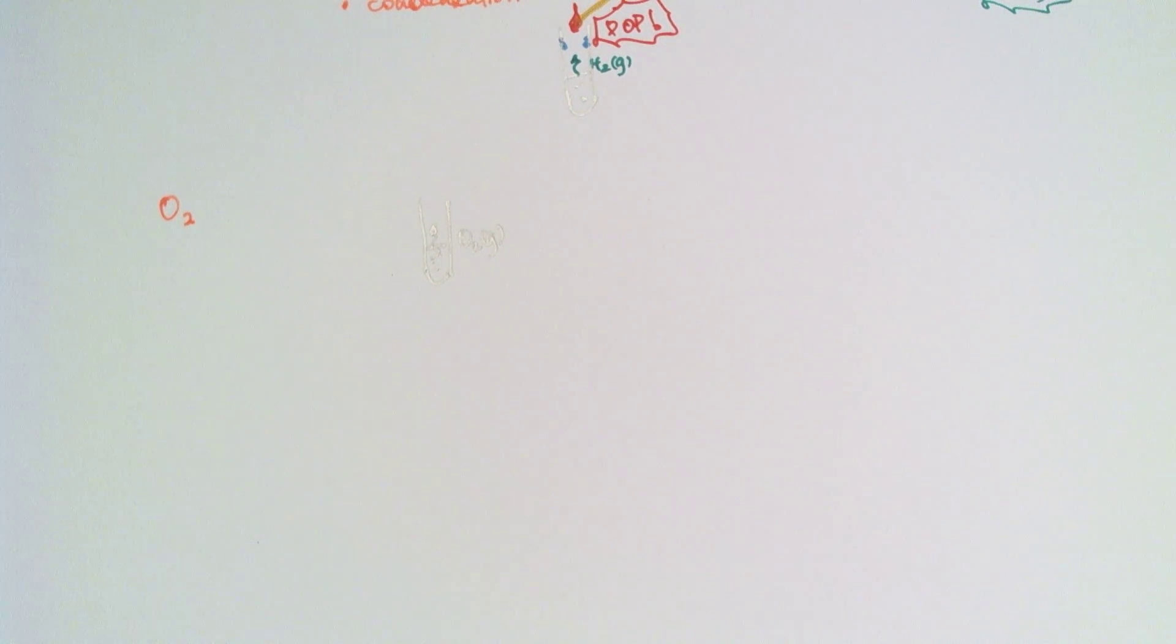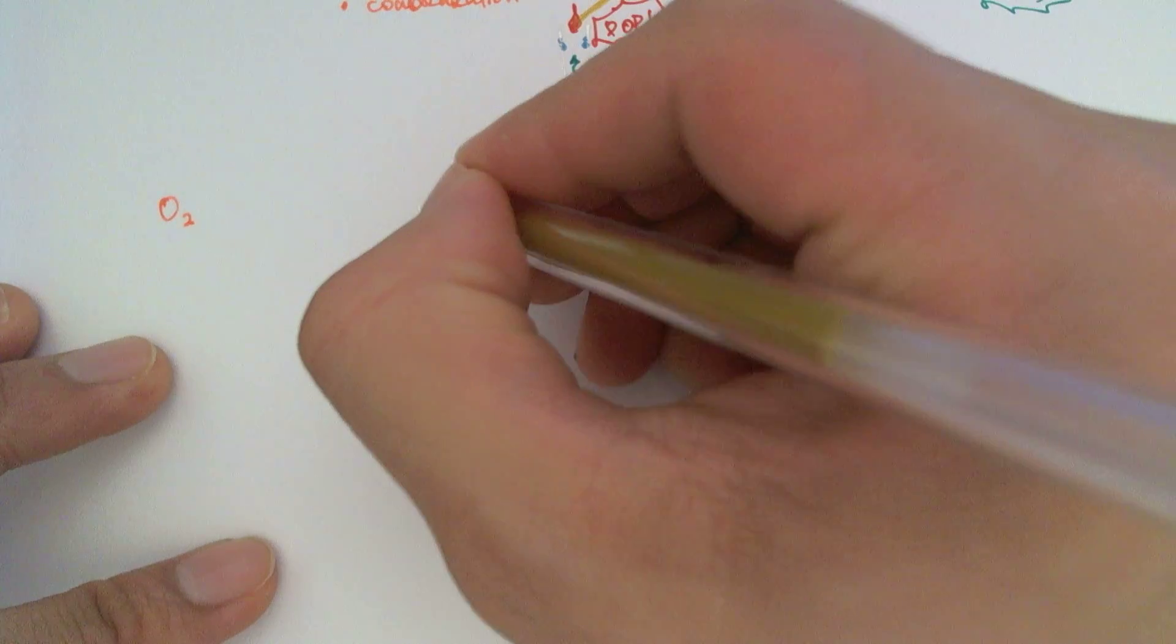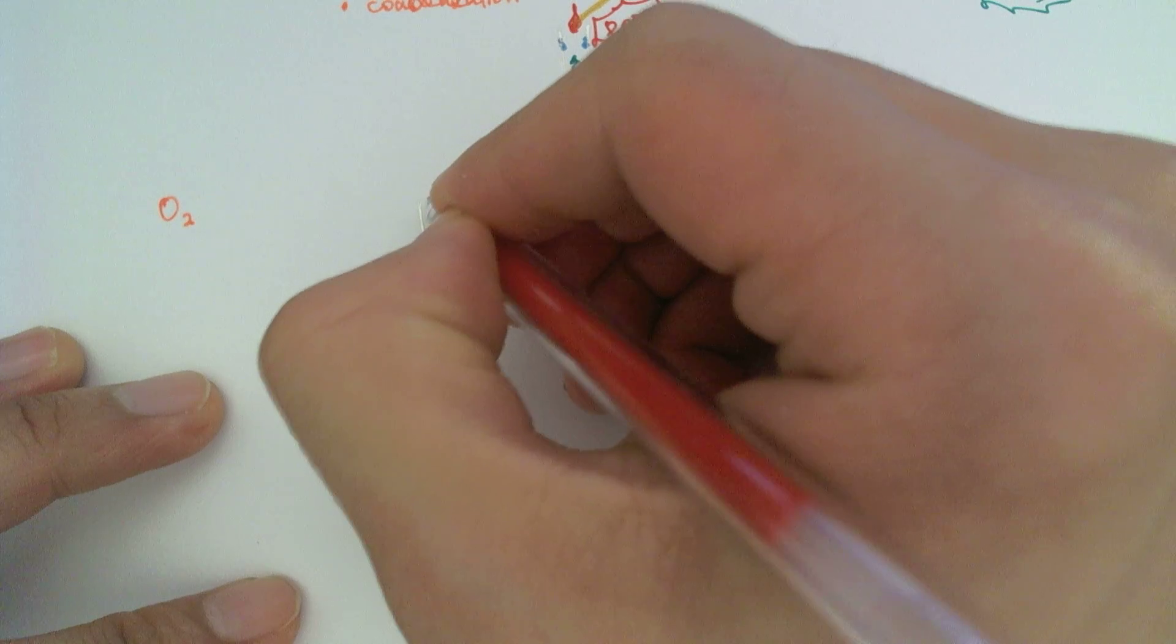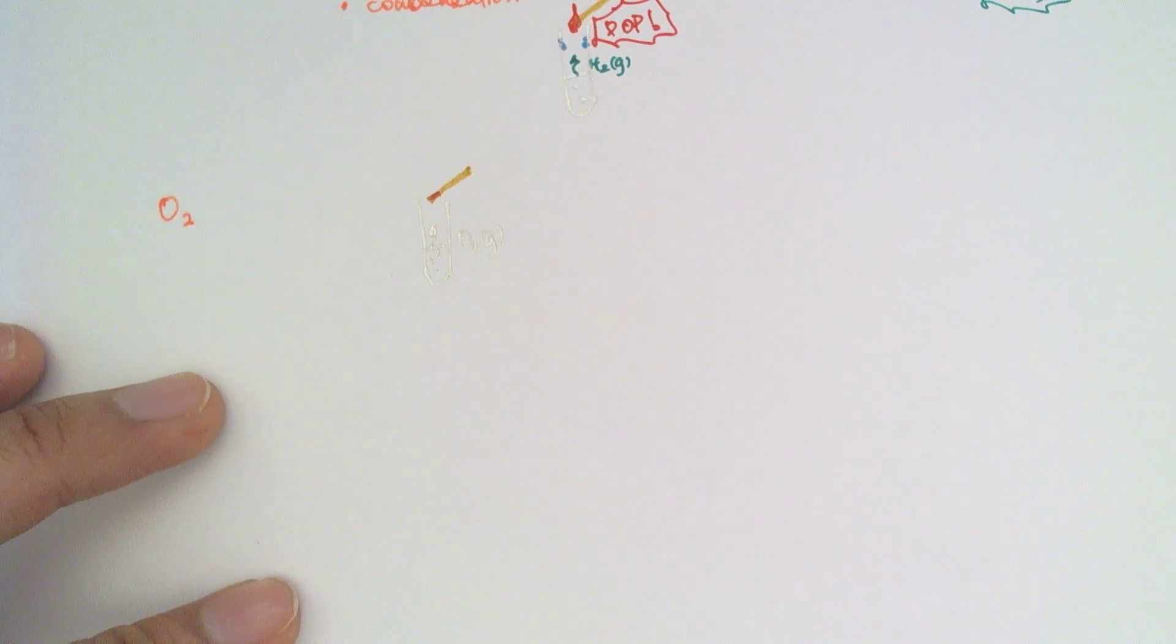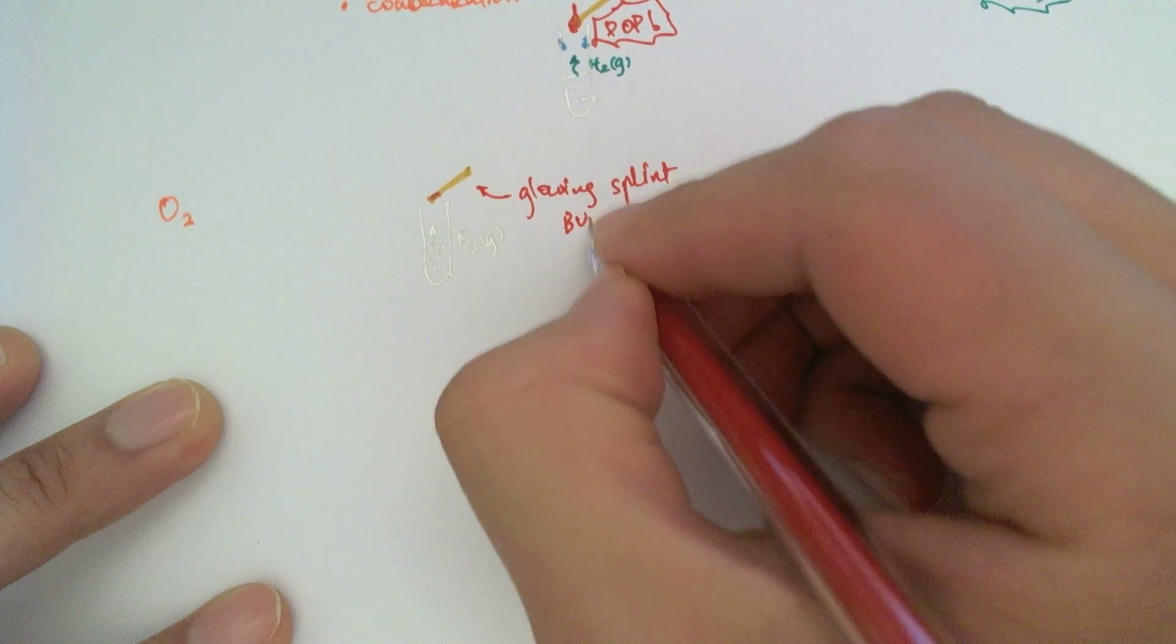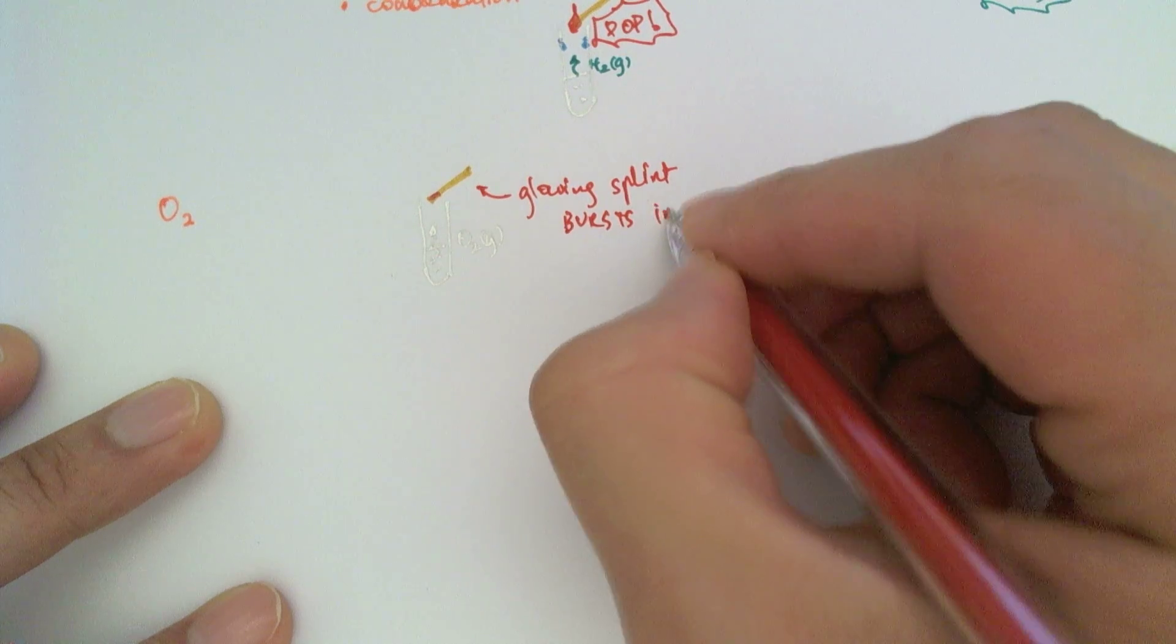What we'll do is you will take a splint, and this time you're going to take a glowing splint instead of a lighted splint. So you take a glowing splint here. It will burst into flames and that indicates the presence of oxygen.